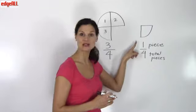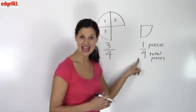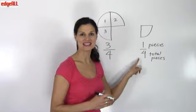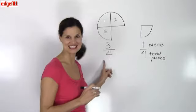And in this case, my numerator is one. And you can see that my denominator stays the same. It's four because I took that whole pie and I cut it into four equal pieces.